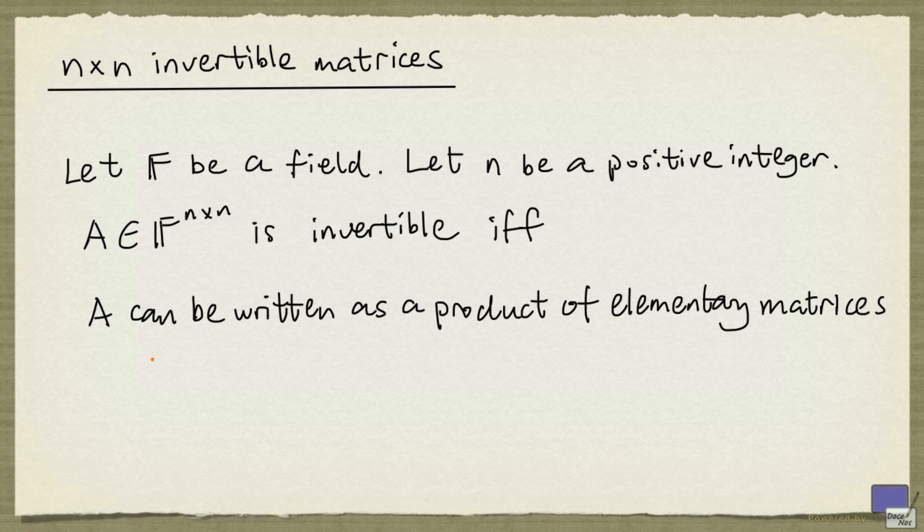So with this result, we can easily come up with an n by n invertible matrix. You just start with an elementary matrix and then perform elementary row operations to it. And we can stop whenever we want. The reason is that multiplying a matrix by elementary matrices is equivalent to performing elementary row operations.